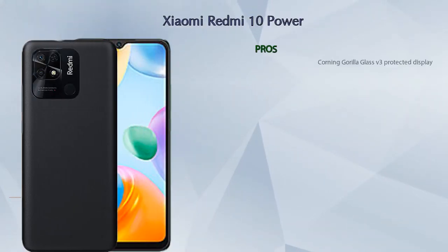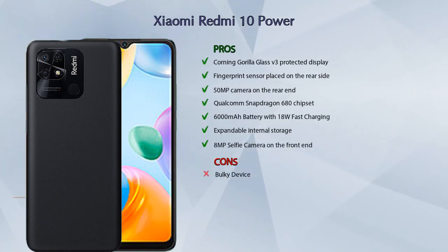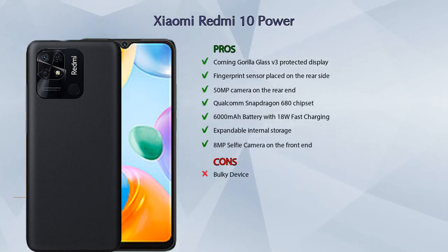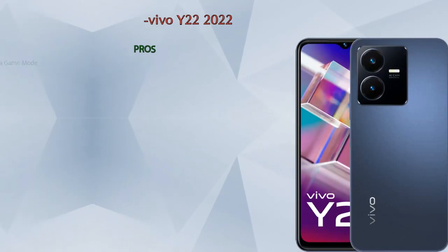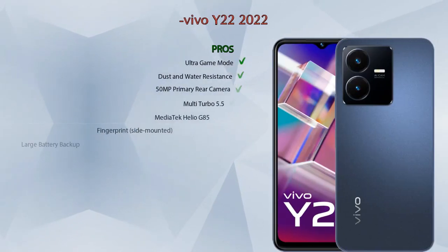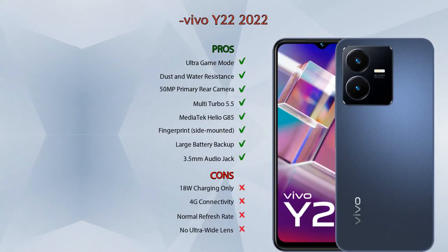Now let's talk about pros and cons. Xiaomi Redmi 10 Power has seven pros and one con. Vivo Y22 2022 has eight pros and four cons.